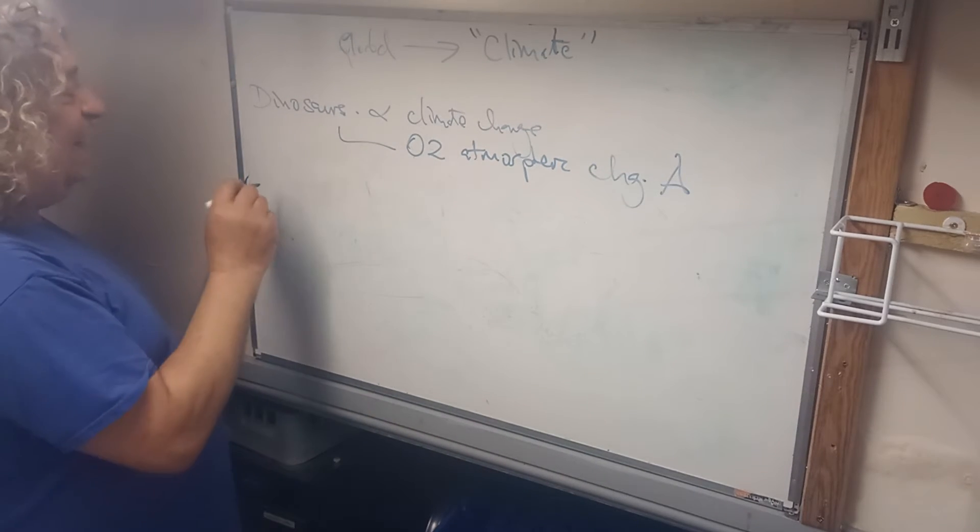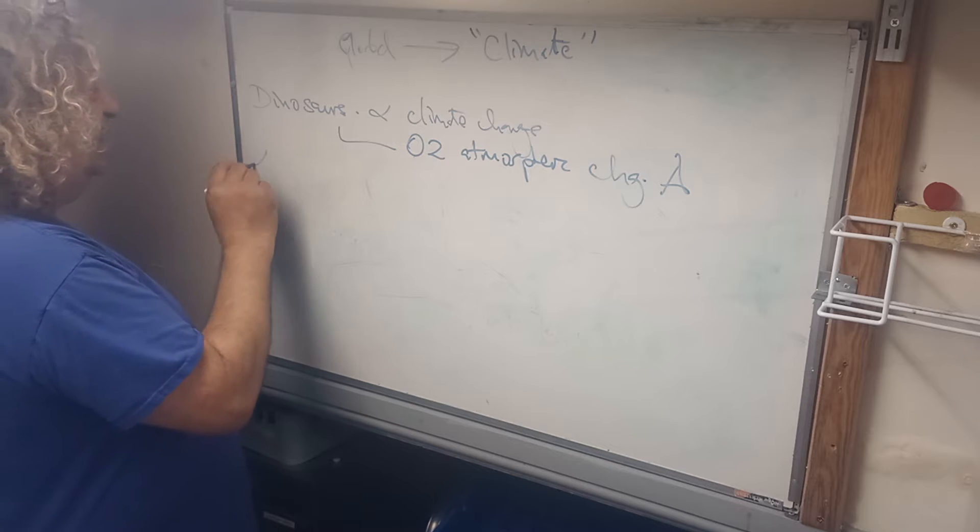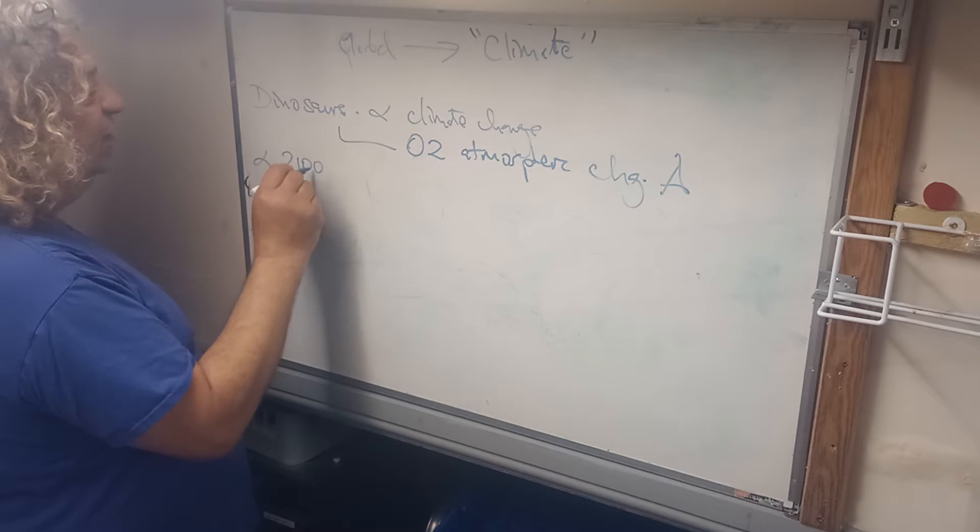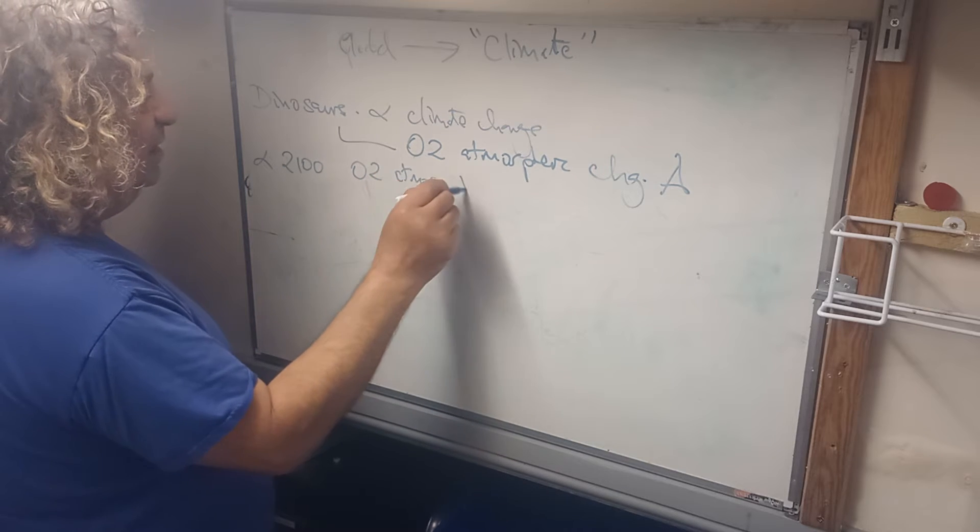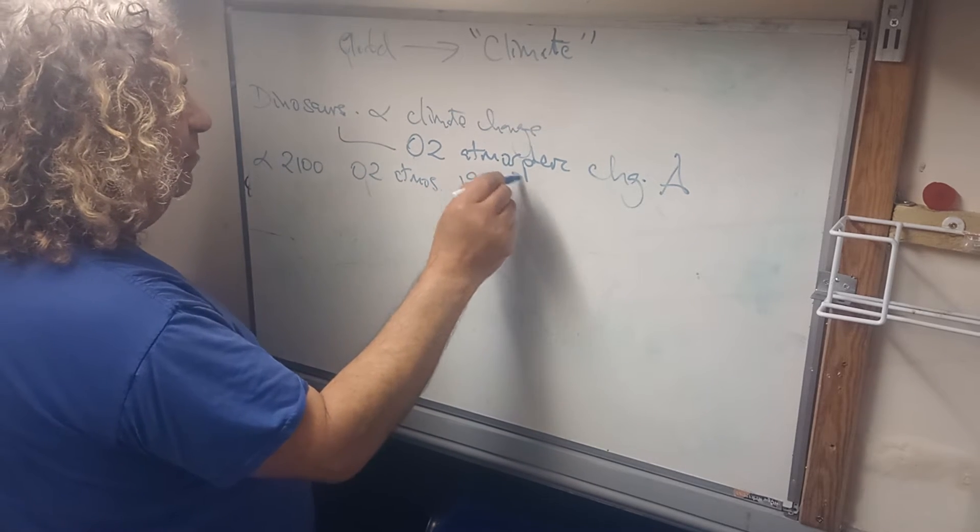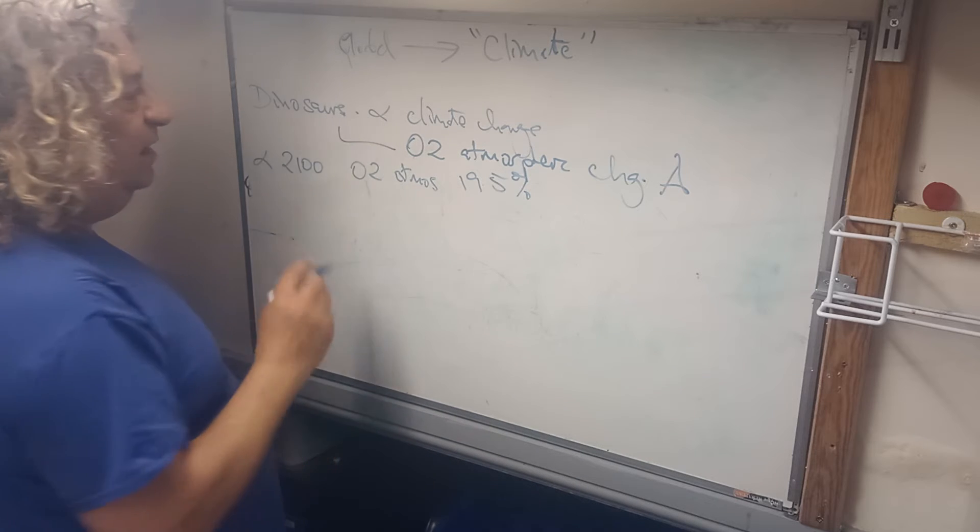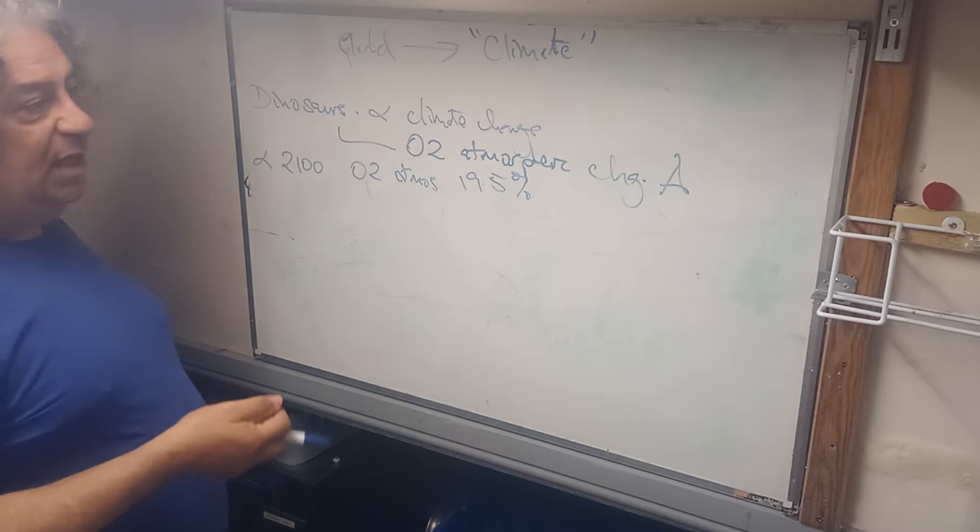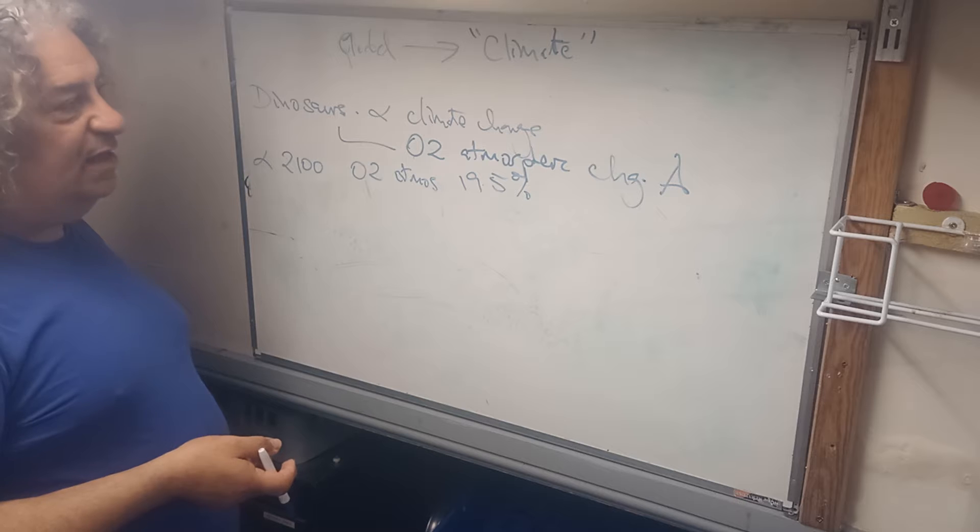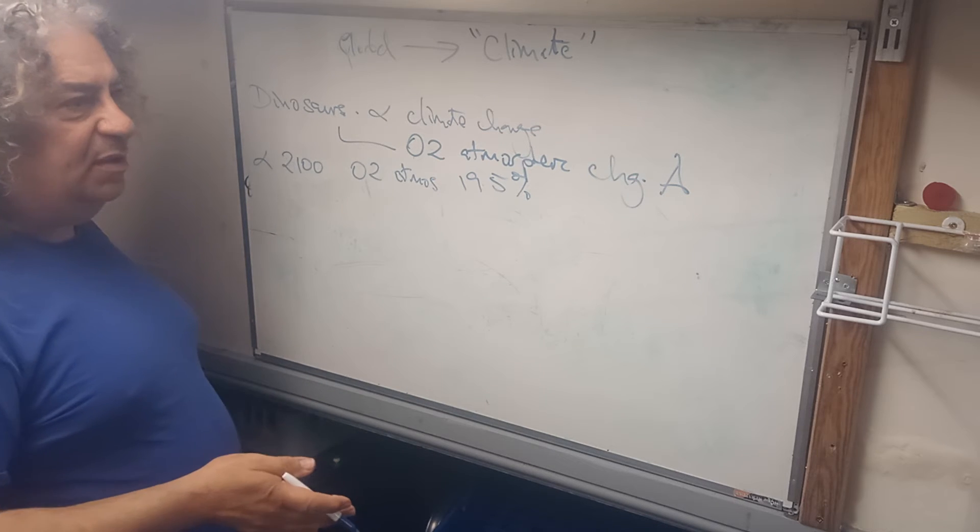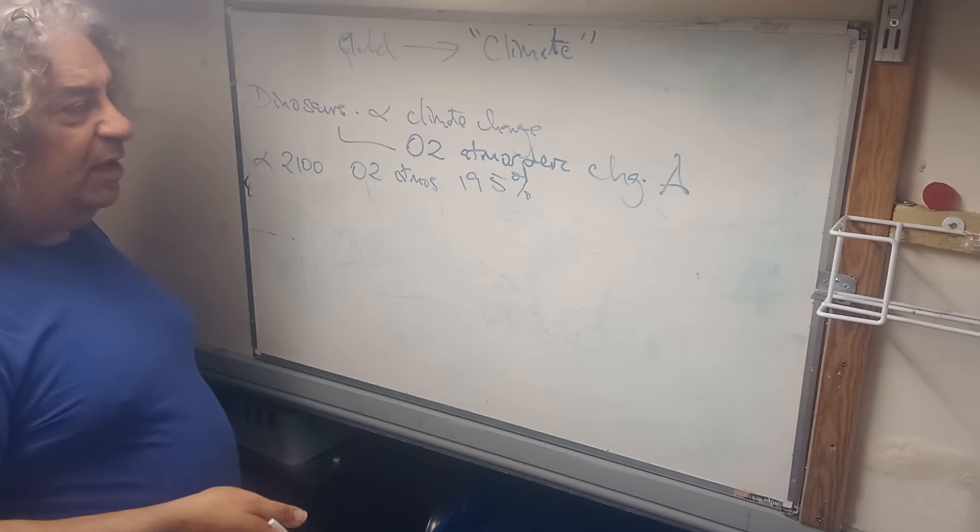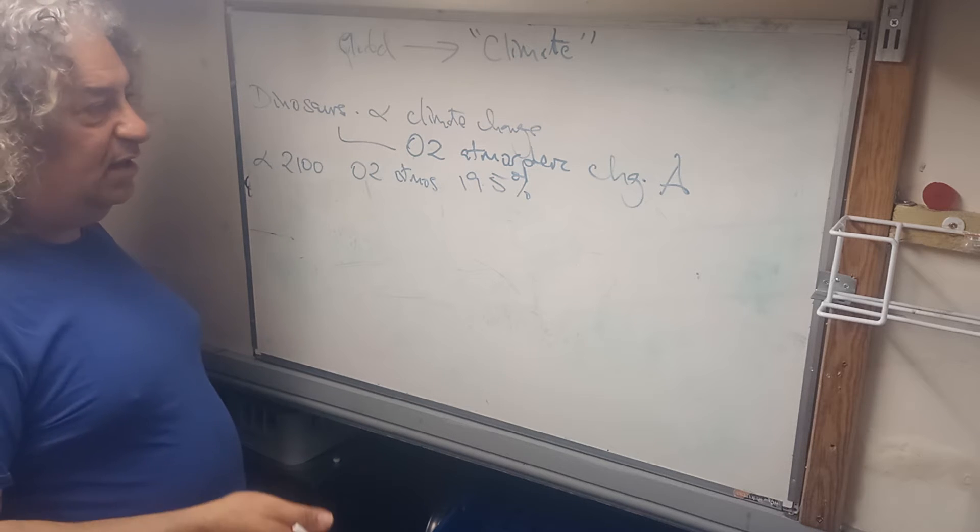We have that now. So it's estimated, estimated 2100, O2 atmos will be 19.5%. Why? Because we've been burning fossil fuels like idiots and putting waste in the ground, both as sustainable methods of being a civilised species. What rubbish.